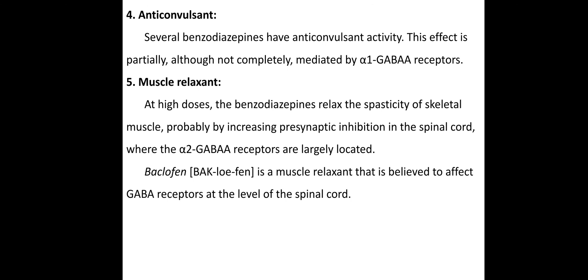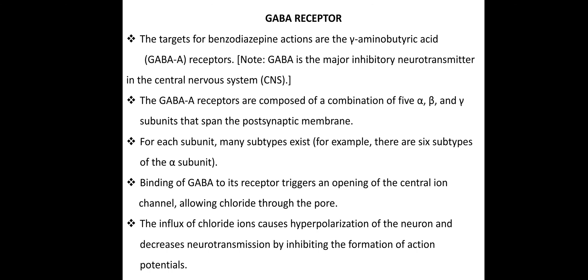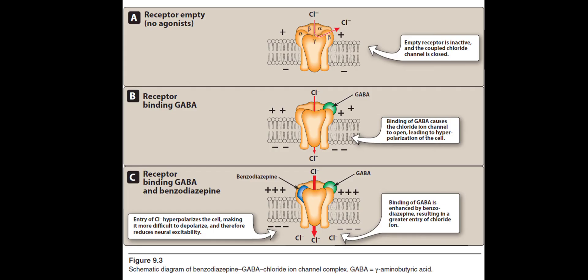The anticonvulsant effect is mediated by alpha-1 GABA-A receptors. Regarding muscle relaxant effect, this is based on the hyperpolarization concept. Baclofen is a muscle relaxant believed to act on the GABA receptor at the level of the spinal cord. For any doubts, you can ask in the comment box. Thanks.